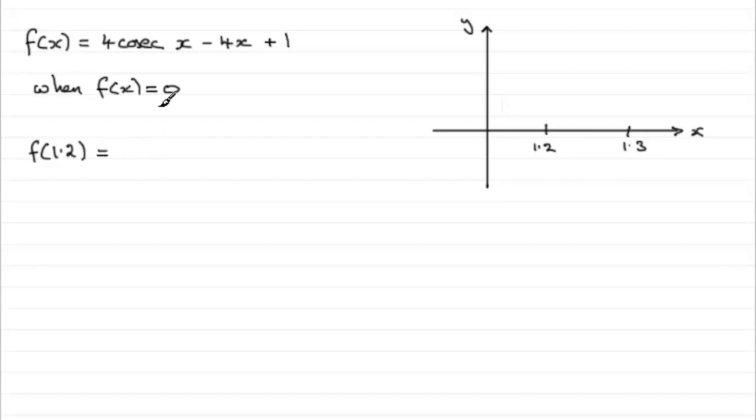So f of 1.2, we just substitute the 1.2 into here. Now we're going to be using a calculator and you don't have a cosec function on your calculator. So cosec x is 1 over sine x. So we can think of this as 4 divided by the sine of 1.2.